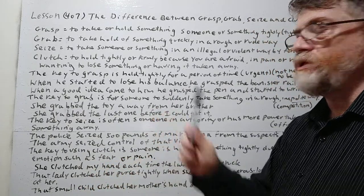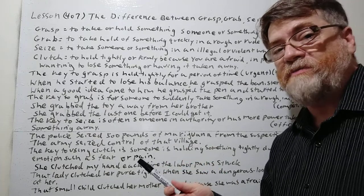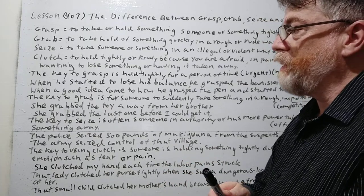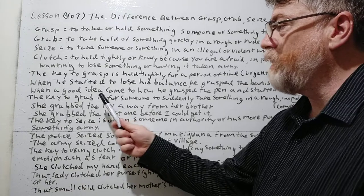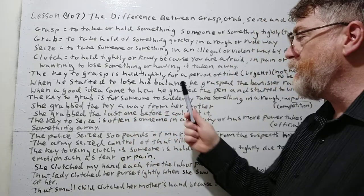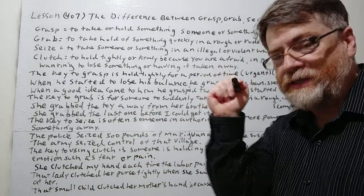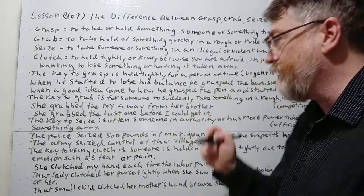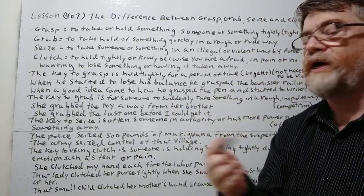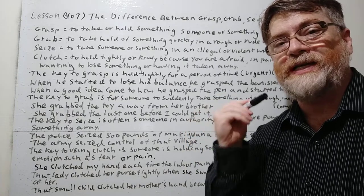He would probably do that because maybe he's an older man and his balance is not so good. The second grasp example: when a good idea came to his mind, he grasped the pen — like 'I've got to get these ideas down' — and started to write. Again, he's holding something very tightly.